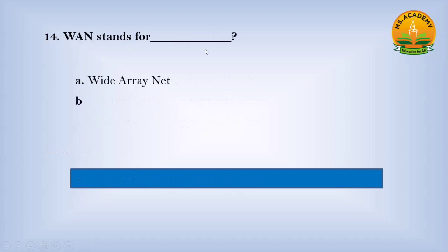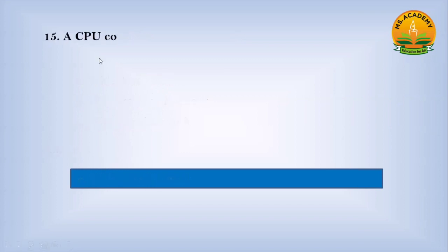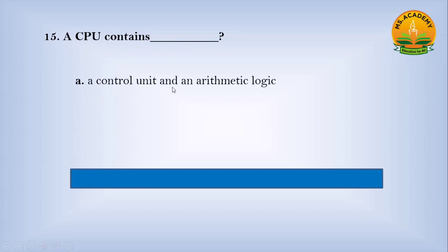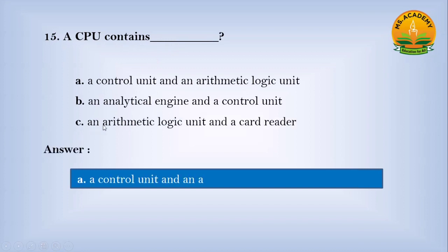WAN stands for dash. Option A Wide Area Net, option B Wireless Area Network, option C Wide Area Network. Answer: C. Number Wide Area Network. A CPU contains dash. Option A Control Unit and Arithmetic Logic Unit, option B Analytic Engine and Control Unit, option C Arithmetic Logic Unit and Card Reader. Answer: A. Number Control Unit and Arithmetic Logic Unit.